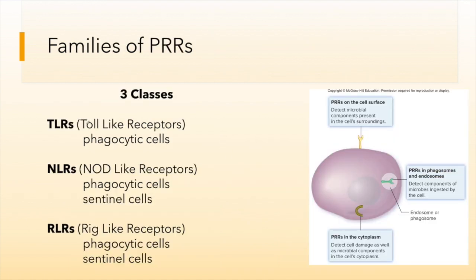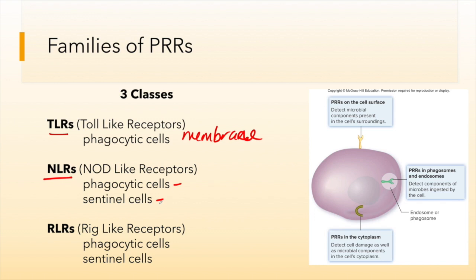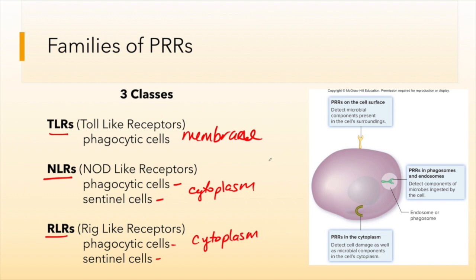The three classes of pattern recognition receptors are toll-like receptors (TLRs), NOD-like receptors (NLRs), and RIG-like receptors (RLRs). TLRs are membrane-bound — always found embedded in a membrane, either the cellular membrane or within an endosome or phagosome. NLRs are found in phagocytic cells and sentinel cells. RIG-like receptors are also found in phagocytic and sentinel cells and are found within the cytoplasm. All of these are protein receptors that are a key component of the innate immune system.